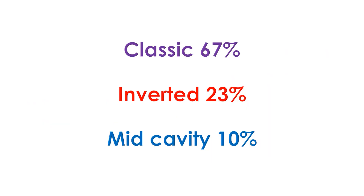Ramraj and colleagues collected data from 60 cases in the literature and found that the classic type constituted 67%, the inverted type 23%, and the mid-cavitary type 10%. They noted that patients presenting with inverted Takoshibokardiomyopathy were significantly younger, with a mean age of 36 years, compared to 62 years for the other types.